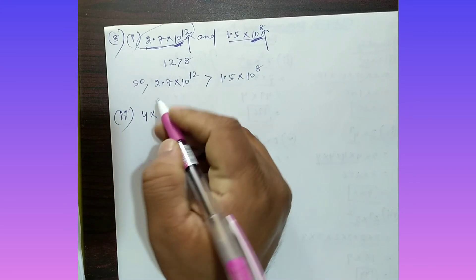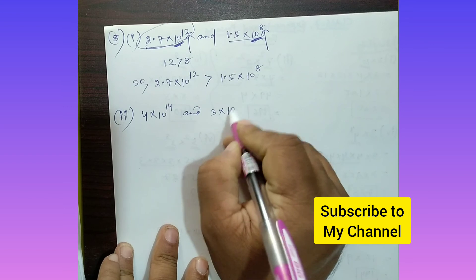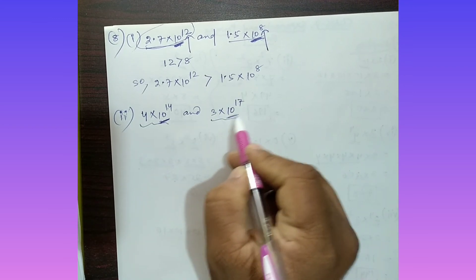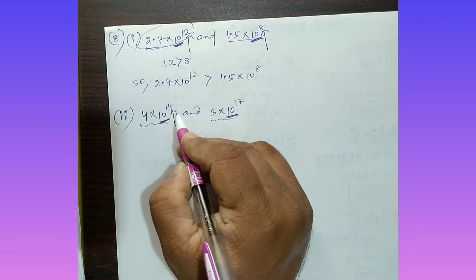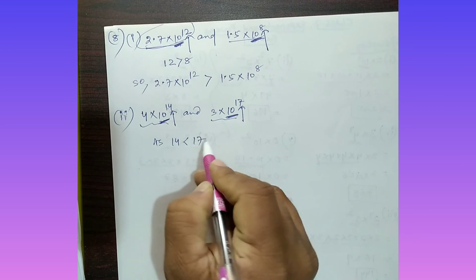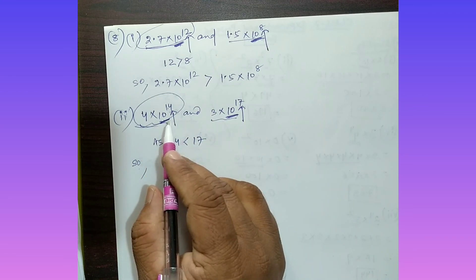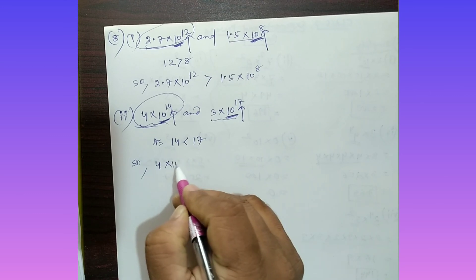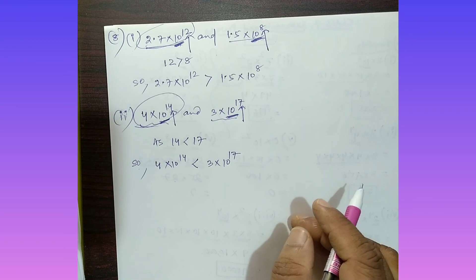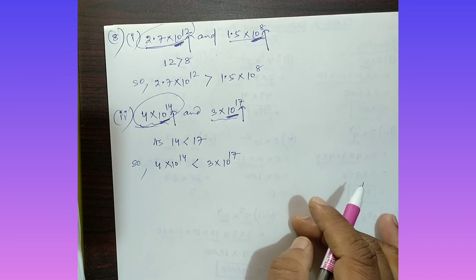Part (ii): Compare 4 multiplied by 10 to the power 14, and 3 multiplied by 10 to the power 17. Again, both have base 10. The exponents are 14 and 17. Since 14 is less than 17, we conclude that 4 × 10¹⁴ is less than 3 × 10¹⁷. That completes Exercise 13.1, question number 8.